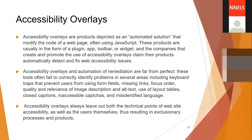Other areas where overlays fail include use of layout tables, closed captions, inaccessible CAPTCHAs, and misidentified language. Alt text is simply an alternative description for screen readers to let the user know what an image is — when a screen reader encounters an image with a textual description, it reads that description instead of just announcing 'image.' Accessibility overlays leave out both the technical points of website accessibility and the users themselves, resulting in exclusionary processes and products. The solution is to encourage developers to make their websites accessible and to think about accessibility even in the design phase.